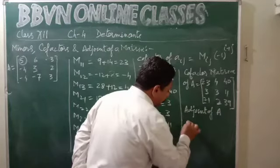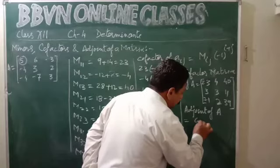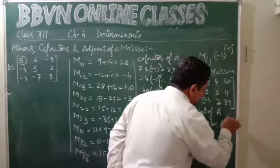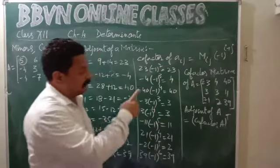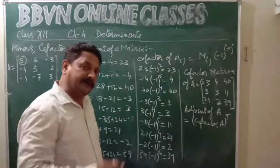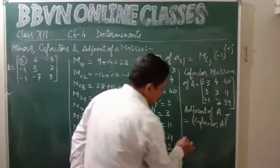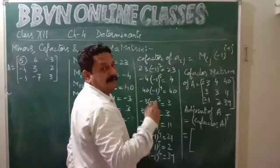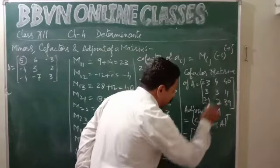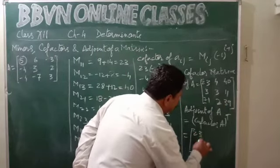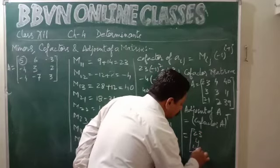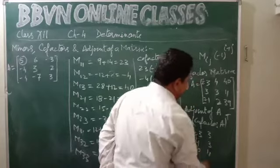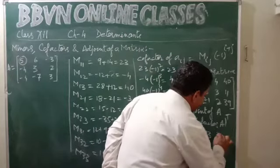Adjoint of matrix A is equal to the cofactor matrix of A transposed. Transposing the cofactor matrix gives the adjoint matrix. Transposing means we interchange the rows and columns: first row becomes first column — 23, 4, 40; second row becomes second column — 3, 3, 11; third row becomes third column — 21, 2, 39.